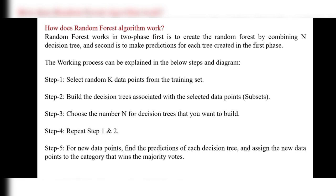The working process: Step 1 — select a random K data points from the training set and build decision trees associated with the selected data subsets. Step 2 — choose the number N of decision trees to build and repeat steps 1 and 2. Step 5 — for new data points, find the predictions of each decision tree and assign the new data point to the category that wins the majority vote.